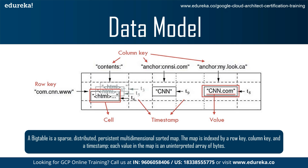Now let's understand the keys in the data model. First is the row key. Row keys in a table are arbitrary strings, currently up to 64 KB in size, though 10 to 100 bytes is a typical size. Every read or write of data under a single row key is atomic regardless of the number of different columns being read or written — a design decision that makes it easier for clients to reason about the system's behavior in the presence of concurrent updates to the same row. Bigtable maintains data in lexicographic order by row key. The row range for a table is dynamically partitioned; each row range is called a tablet, which is the unit of distribution and load balancing. Reads of short row ranges are efficient and typically require communication with only a small number of machines.